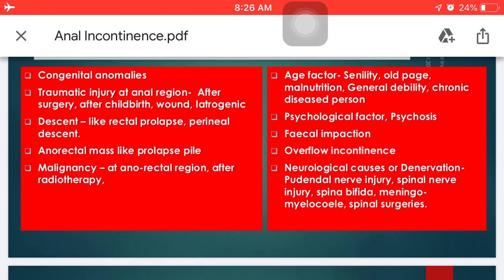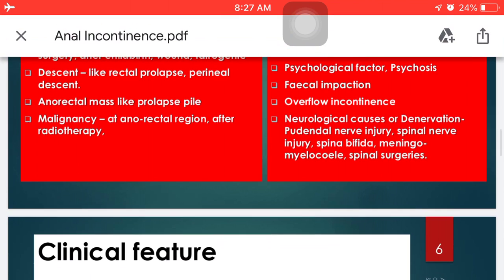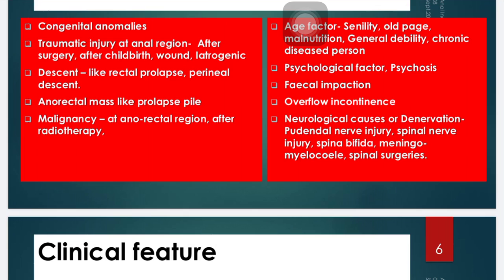Age-related factors such as senility, old age, malnourished conditions, general debility, and chronic disease also contribute to anal incontinence. Psychological factors and psychosis are also responsible. Fecal impaction and overflow incontinence caused by neglecting the natural urge of defecation can also cause incontinence. Neurological causes include denervation such as pudendal nerve injury, spinal nerve injury, spina bifida, meningomyelocele, and spinal surgeries.